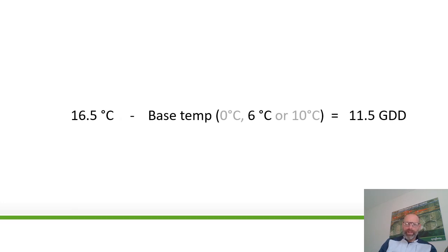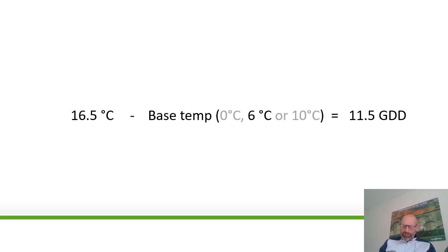Then you minus a base figure away, which in this situation is 6 degrees. The normal base temperatures you'll come across are 0 degrees, 6 degrees, and 10 degrees, used around the world. Warm season grasses, cool season grasses, different climates — a lot of guys in the States will use 0 and 10 degrees, whereas we'll use 6 degrees. The base temperature is really the temperature at which you think there will be some growth establishing. In the UK we tend to use 6 degrees, giving you in this situation a growth degree day figure of 11.5.